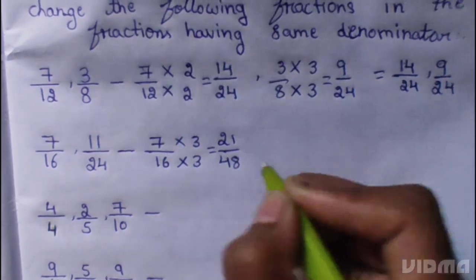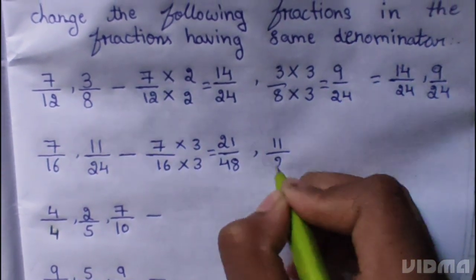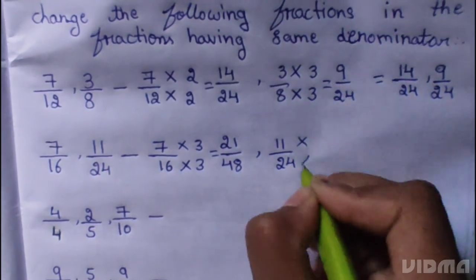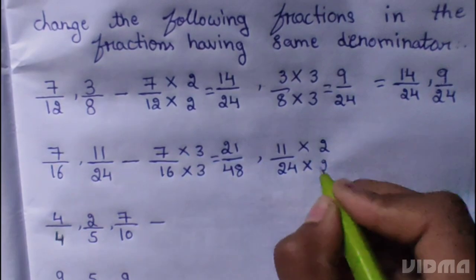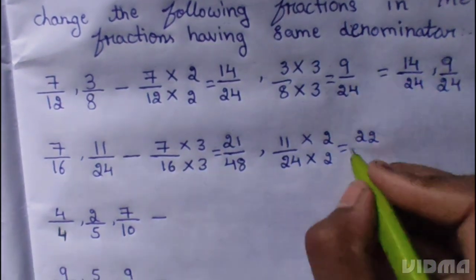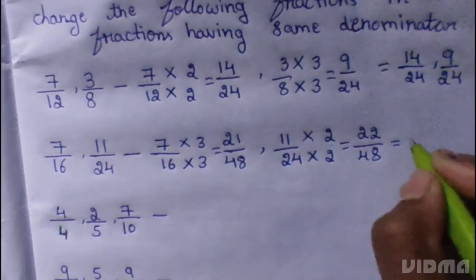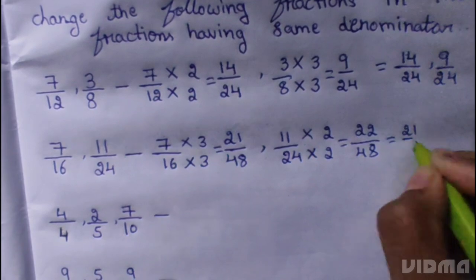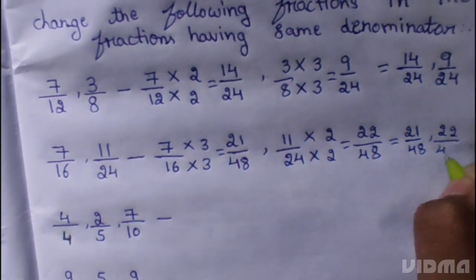11 by 24. 11 multiplied 2, 24 multiplied 2. 11 to the 22, 24 to the 48. Answer, 21 by 48, 22 by 48.